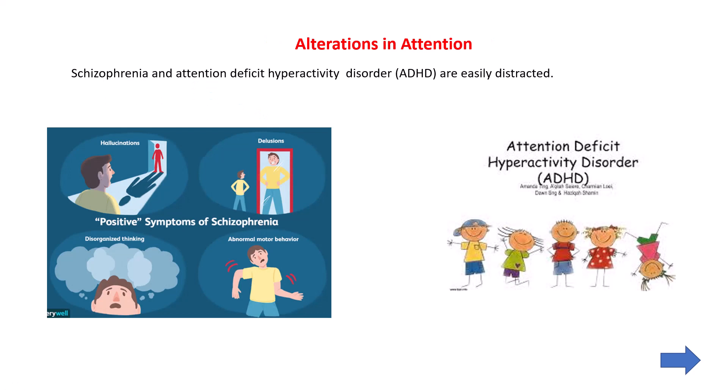in those cases, people will not be able to attend to a particular object or situation. They are very prone to get distracted from the object or anything they are supposed to be attentive to. This is called alteration in attention — when a person is not able to maintain their attention on a particular object or situation.